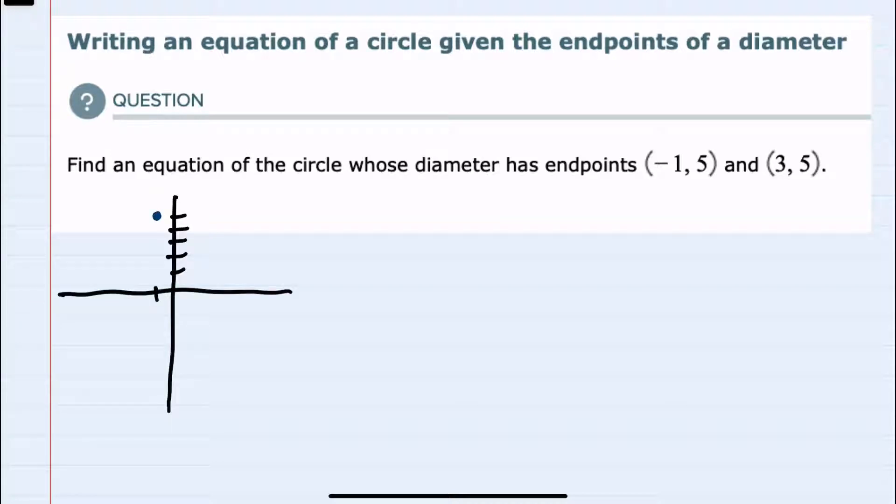We have minus 1, 5, and then the point 3, 5, and we're told that these are the endpoints of the diameter of this circle.